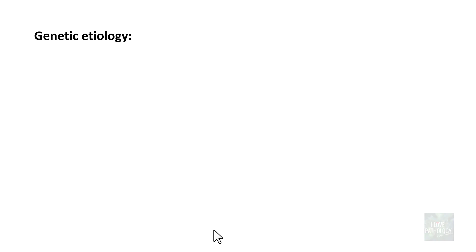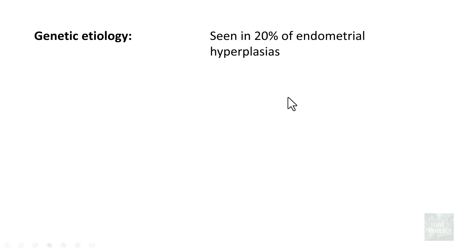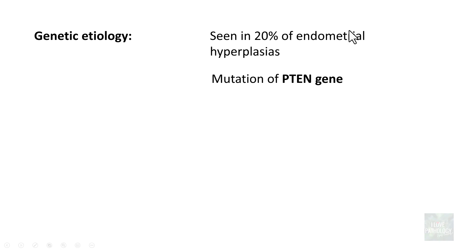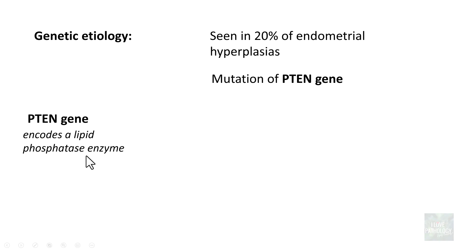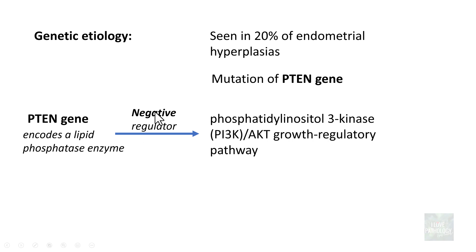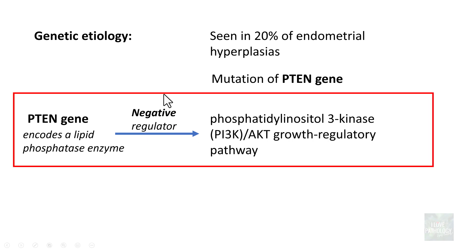Regarding genetic etiology, mutations in the PTEN gene are seen in 20% of endometrial hyperplasias. The PTEN gene encodes a lipid phosphatase enzyme, which is a negative regulator of the phosphatidylinositol 3-kinase PI3K/AKT growth regulatory pathway. So the PTEN gene is a negative regulator of this PI3K/AKT growth regulatory pathway.